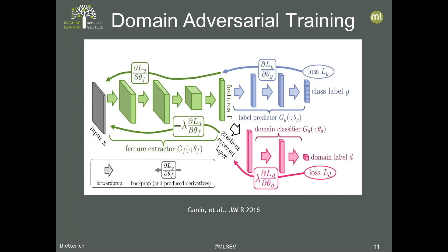The neural network structure has the input going through layers to produce a hidden representation — the features. That representation is used to do two things at once: on top, predict the outcome Y (the patient's disease); on the bottom, predict whether a data point belongs to hospital one or two. Hospital D2 data can't train the top classifier, but all data trains the bottom. Together, they find a representation that maintains information needed for classification while discarding anything revealing the difference between the two hospitals.